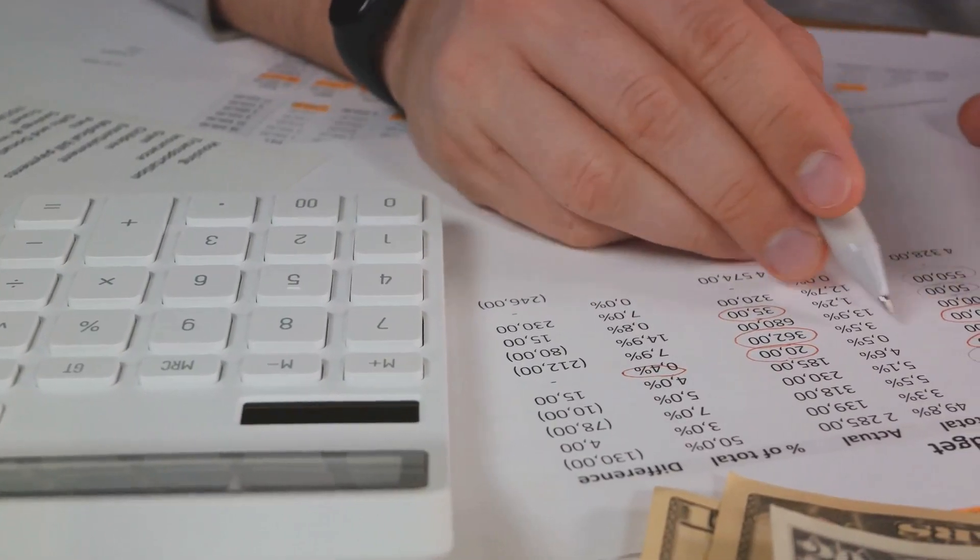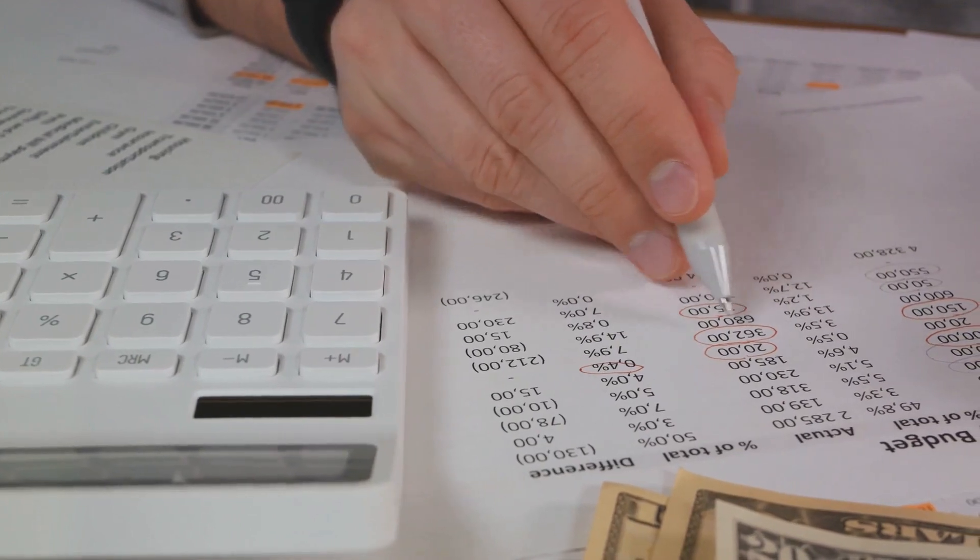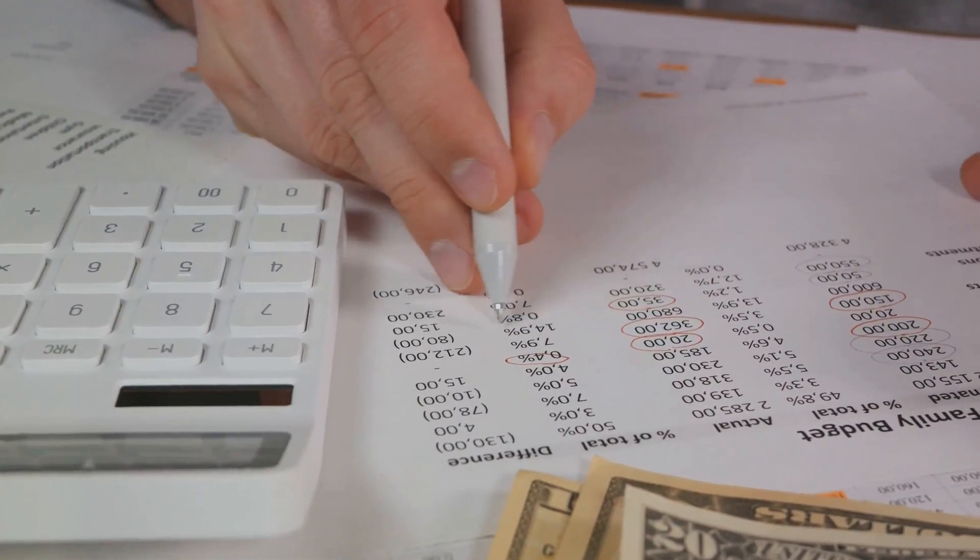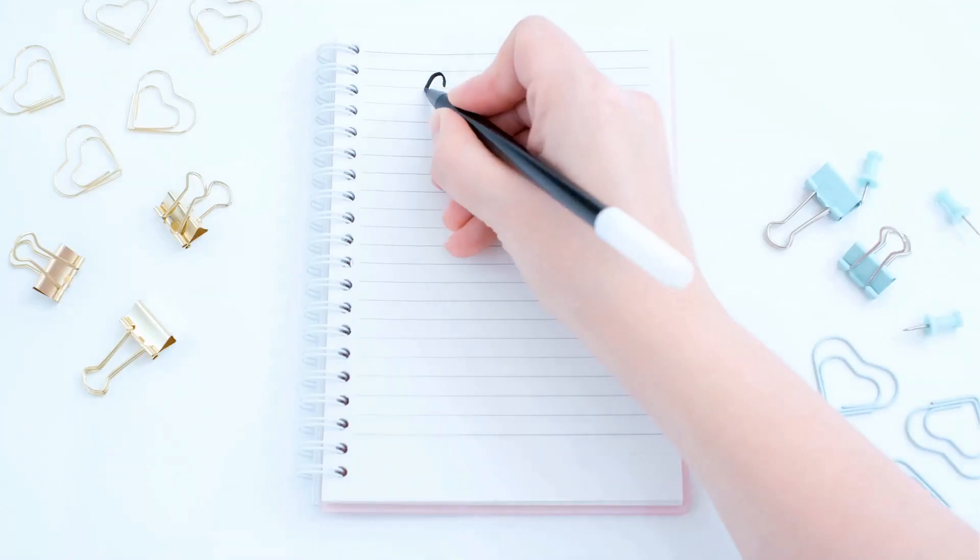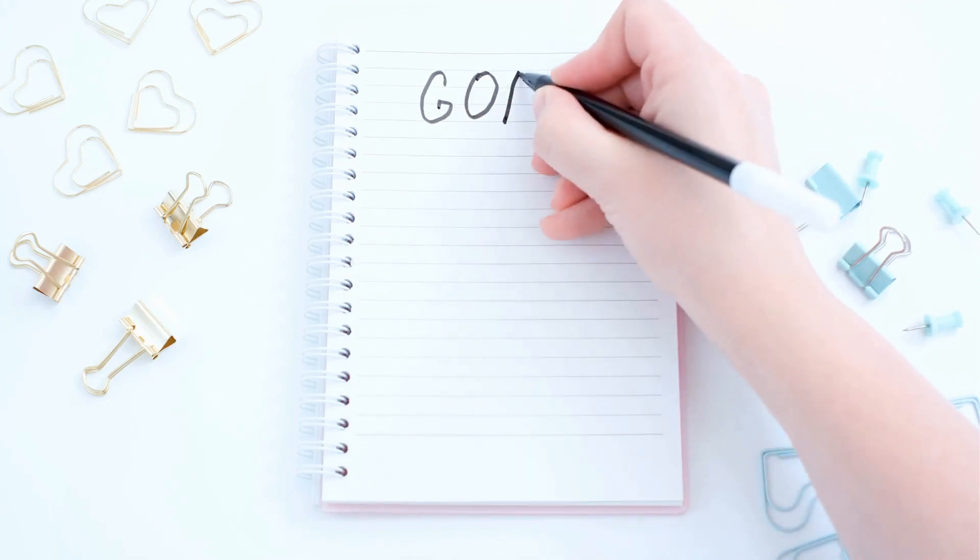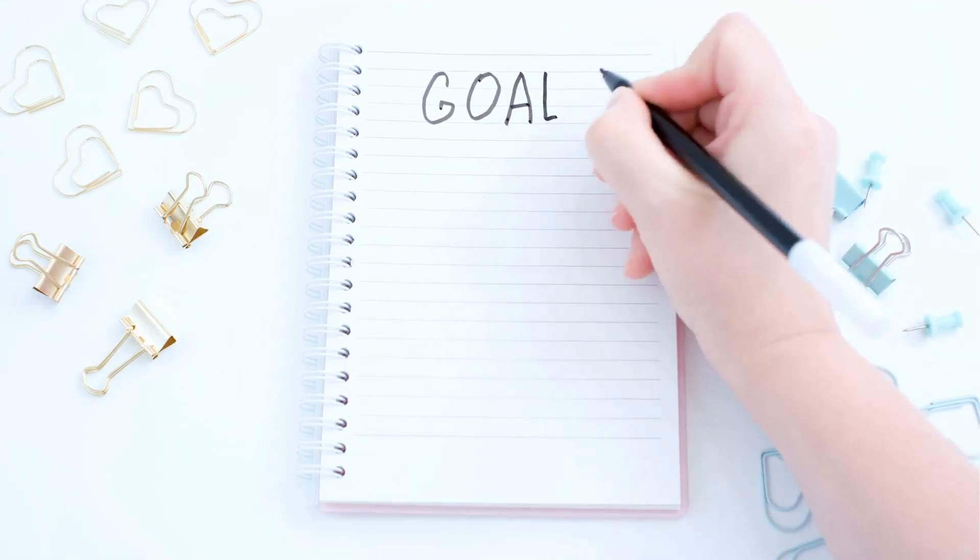So whether you're aiming to save for a dream home, pay off lingering debts, or establish a robust emergency fund, it's crucial to set clear, specific, and measurable financial goals. Think of these goals as your financial targets, the milestones that will guide you towards your ultimate vision. Here's a tip: make your goals SMART.